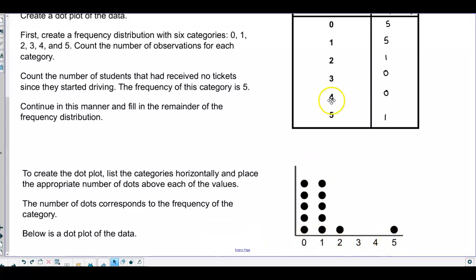And then we're going to create the dot plot. So for zero, we put in one, two, three, four, five dots. For one, we're putting in one, two, three, four, five dots.